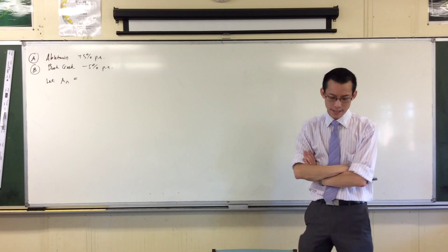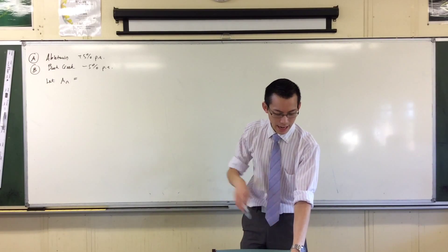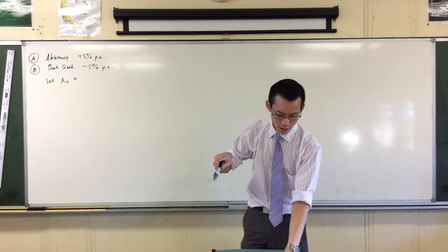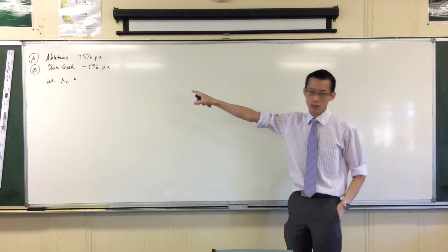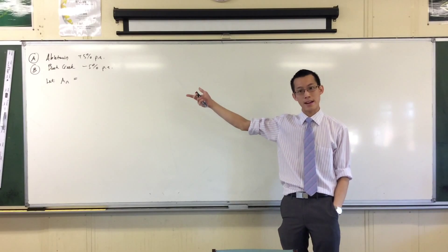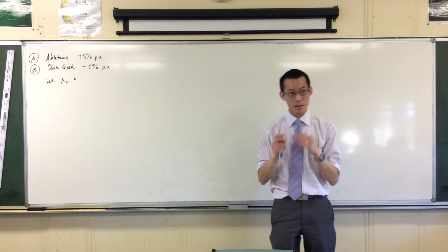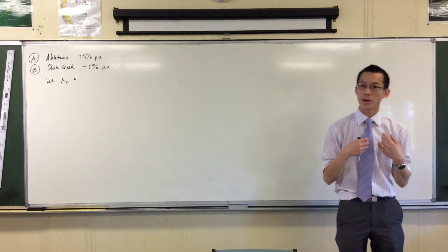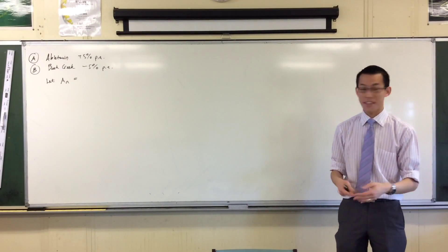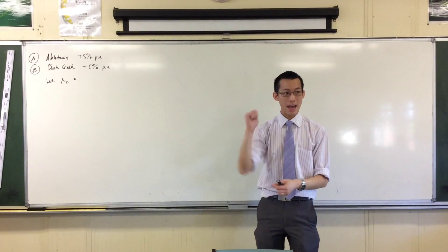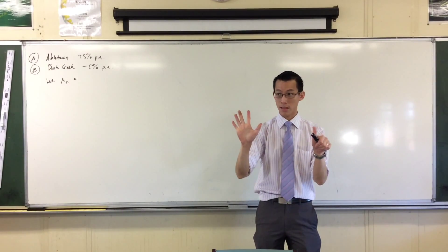I can either interpret this as how many were in the first year, second year, third year — just A1, A2, A3, A4, A5, A6 — and that can be my answer. Or alternatively, I can read it as find the total number, where I want all six years added together — how many in the first year plus how many in the second year, the third year, the fourth year, and so on.